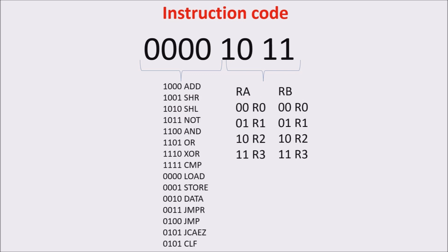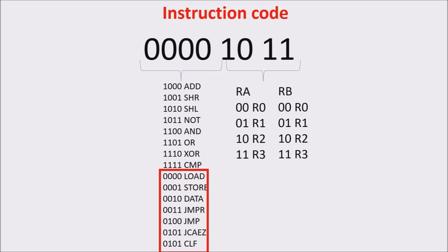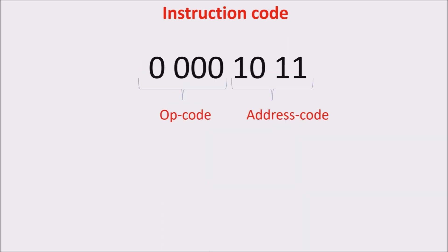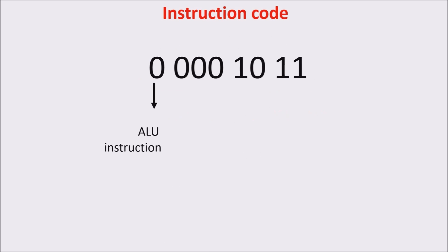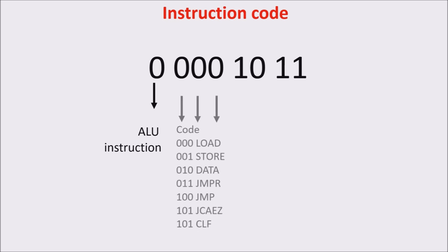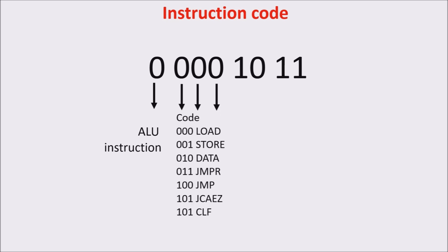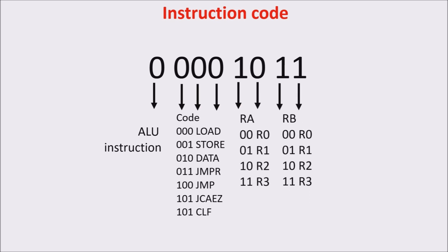We already saw the eight ALU instructions, and now we add the NOT ALU instruction to our set. In this video, we see some instructions which don't involve the ALU, so first bit at zero, such as the load, store and data instructions. Here you can see the OP code of the NOT ALU instructions and the address code to locate our four registers, R0 to R3.